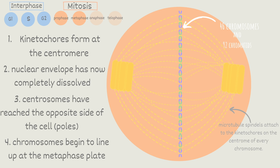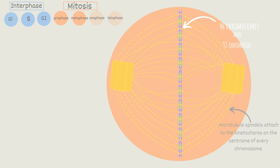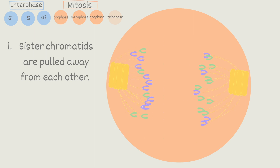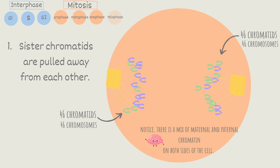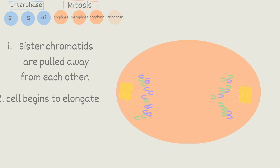Once all chromosomes are attached to the microtubules, the cell enters anaphase. Here the sister chromatids are pulled away from each other at both ends — 46 chromatids are pulled to one side while 46 chromatids are pulled to the other side, leaving 46 chromosomes on both sides. Notice there is a mix of maternal and paternal chromatids on both sides of the cell. Secondly, the cell begins to elongate to accommodate both sets of chromosomes.